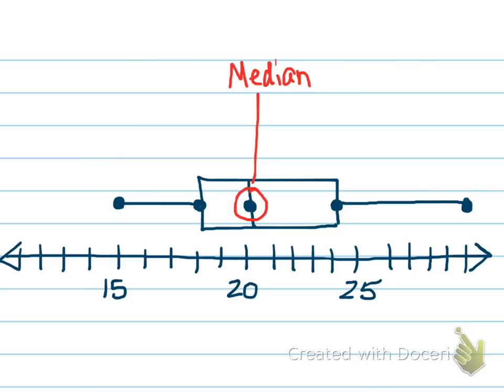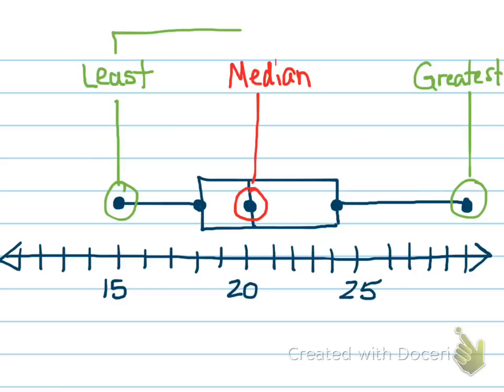The points on either side, the far ends, here and here, are going to be the least value and then the greatest value in our number set. So between these two numbers is going to give us the range. Now we still have a couple of points on the box that we're going to need to talk about.